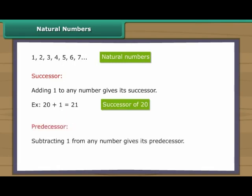Subtracting one from any number gives its predecessor. For example, subtracting one from twenty gives nineteen, which is the predecessor of twenty. Interesting question: What is the largest natural number?